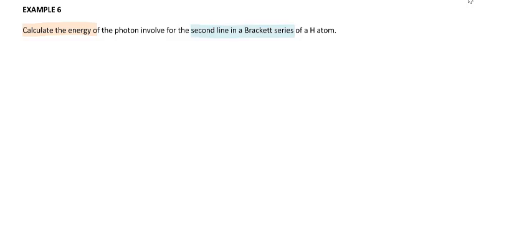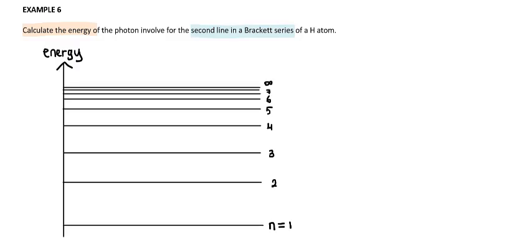So let's draw the energy levels so you can visualize it. The energy level diagram consists of the y-axis which is the energy. We have the energy levels, and the lowest energy level is n is equal to 1, also called the ground state.